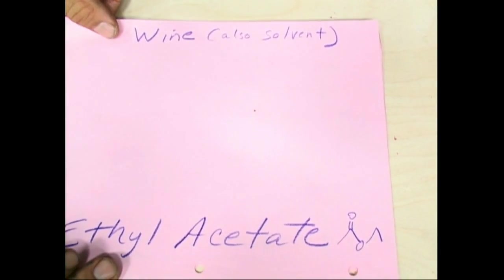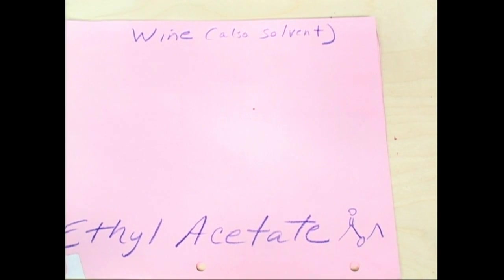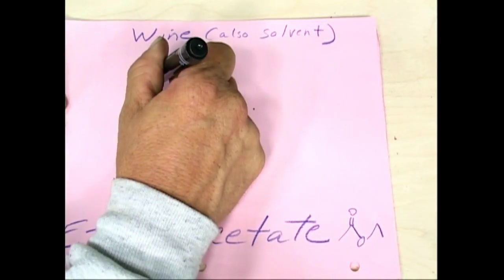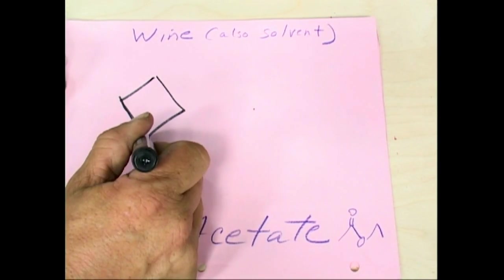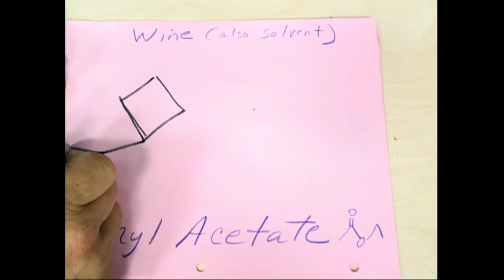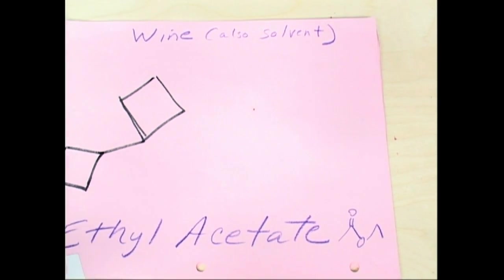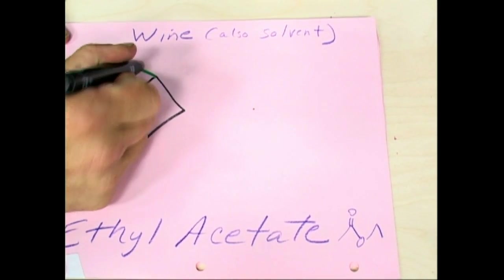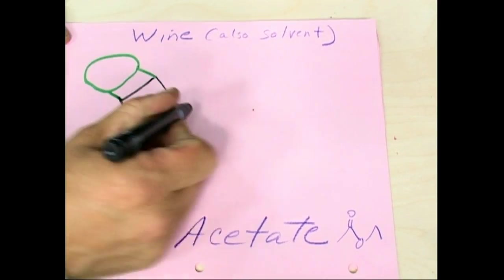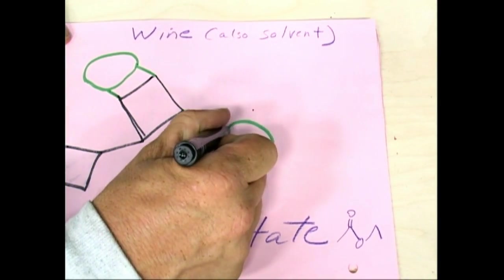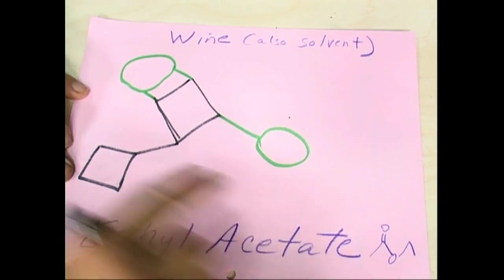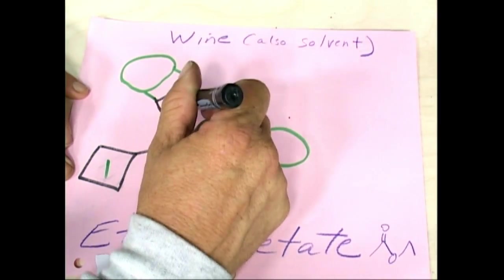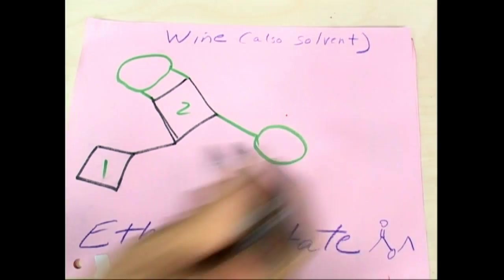Now we're on to ethyl acetate. This is what you'll smell in wine. This is the ethyl, ethyl acetate. So there's two carbons there.